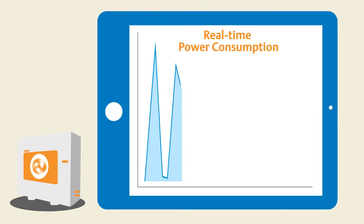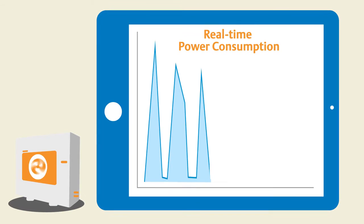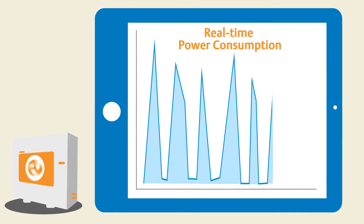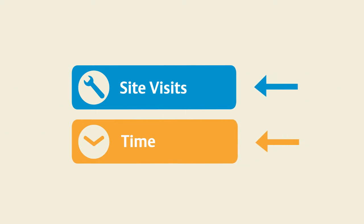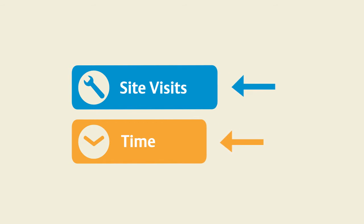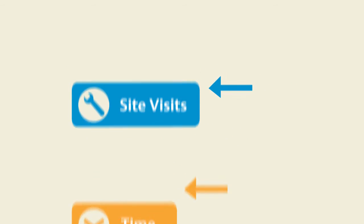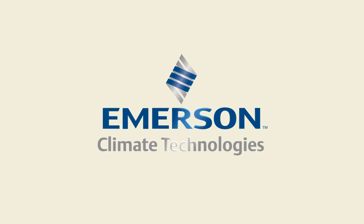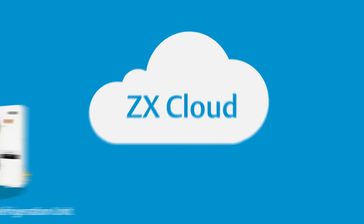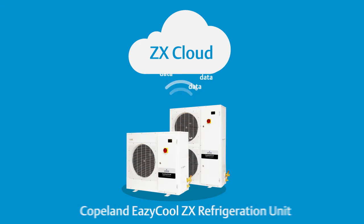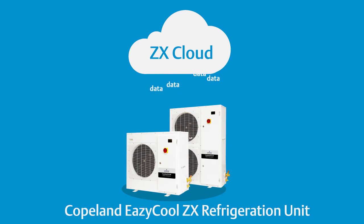Imagine a tool that allows you to see real-time information on the energy consumption of your refrigeration system, wherever you are — react on time while minimising site visits for more efficient time management. Why just imagine when Emerson can make all of these a reality by introducing ZX Cloud, the unique product monitoring tool featured in the Copeland EasyCool ZX Refrigeration Unit.